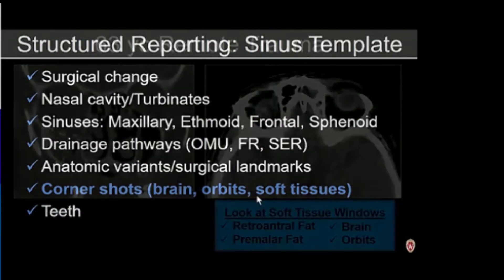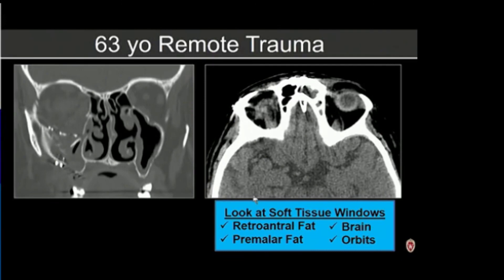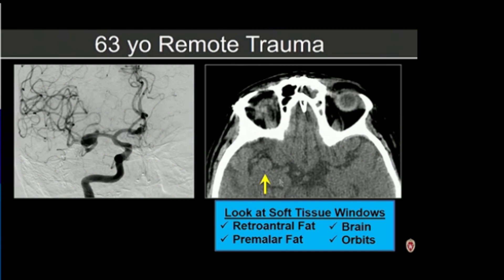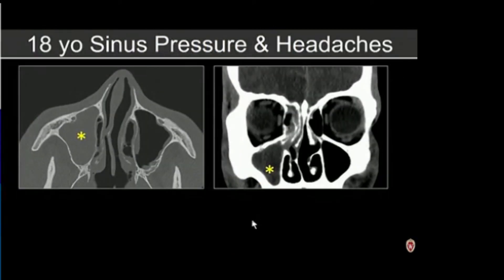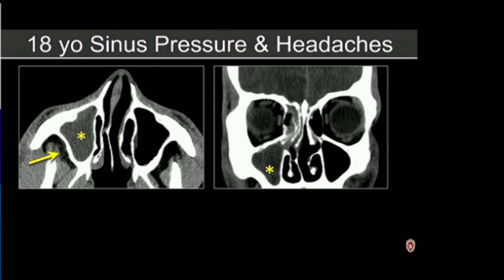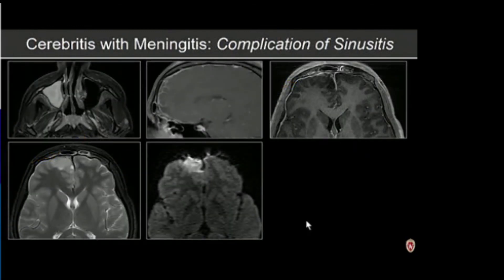A few important corner shots to finish: always review soft tissue windows for incidental findings and regional structures. In a 63-year-old with remote trauma and a ZMC fracture repair, always look at the brain — in this case a round structure along the M1 segment was confirmed to be an aneurysm. When evaluating sinus disease, look at regional anatomy carefully: opacification of the maxillary sinus with infiltration of the retroantral fat and low attenuation in the anterior-inferior frontal lobe with a small focus of gas, confirmed on MR as cerebritis with meningitis — serious complications of sinusitis.